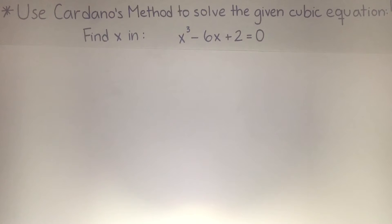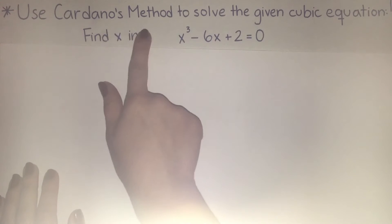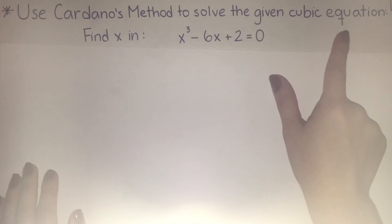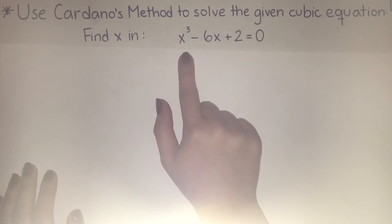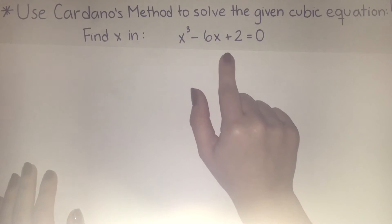Hello, my name is Yarinette Rivera and today I will be solving a problem for my history of mathematics course presentation. This is the problem: use Cardano's method to solve the given cubic equation. We have to find x, where x cubed minus 6x plus 2 is equal to 0.